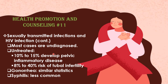Continuing with STIs: most cases are actually undiagnosed. If untreated, usually 10% to 15% develop pelvic inflammatory disease, and 8% to 40% have a risk of tubal infertility. Regarding gonorrhea, similar statistics exist in the US. Syphilis is less common.